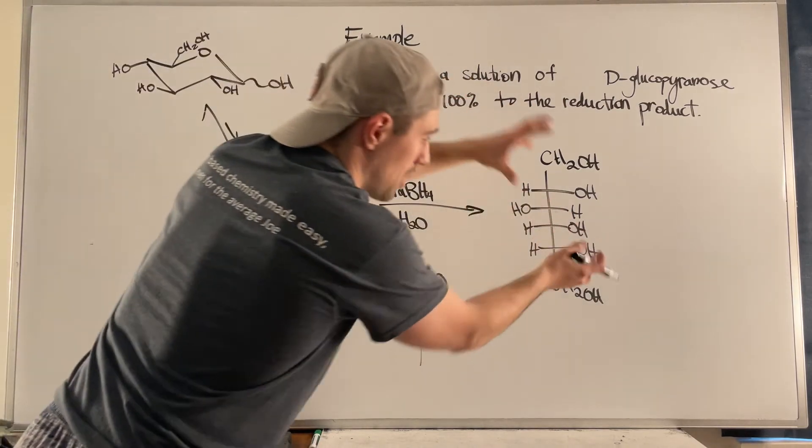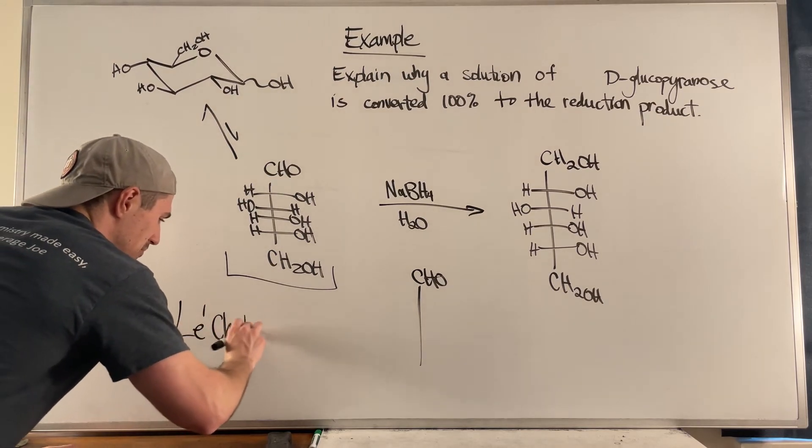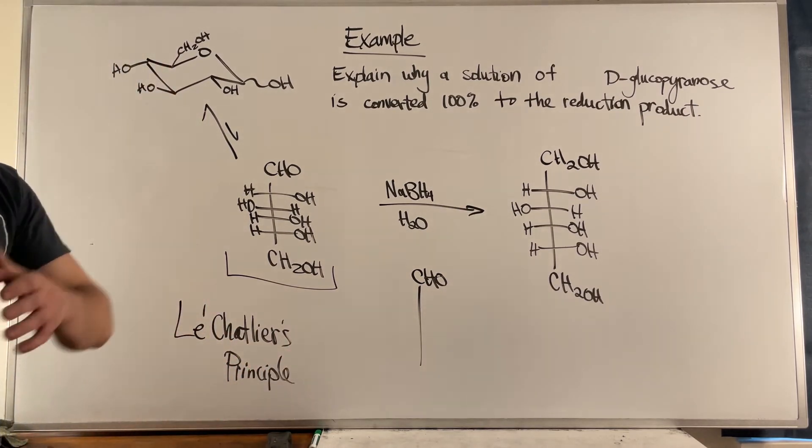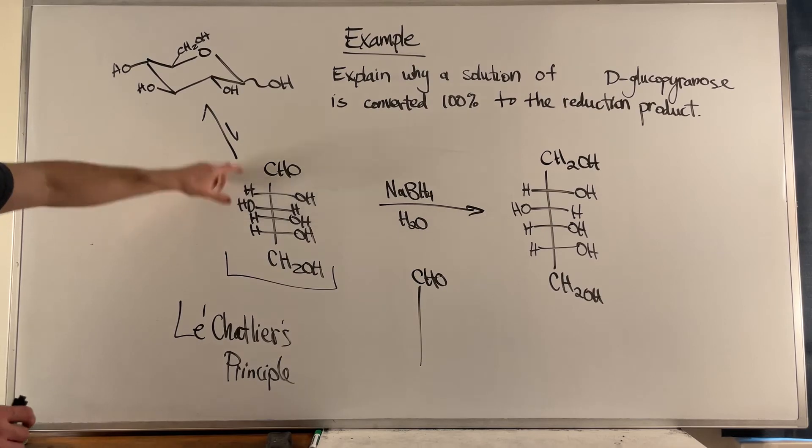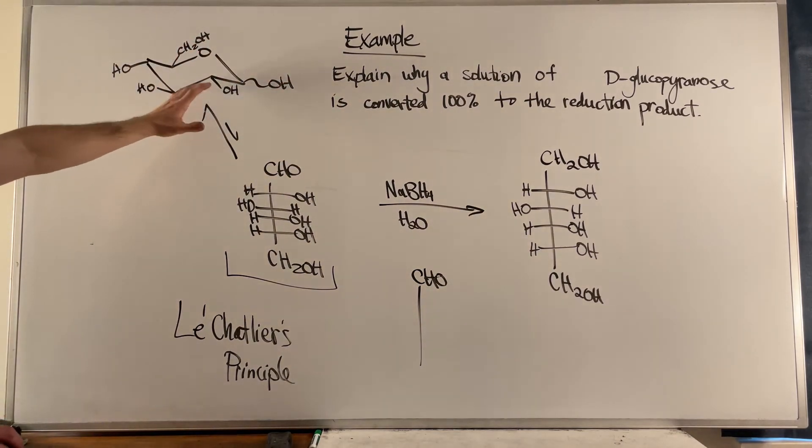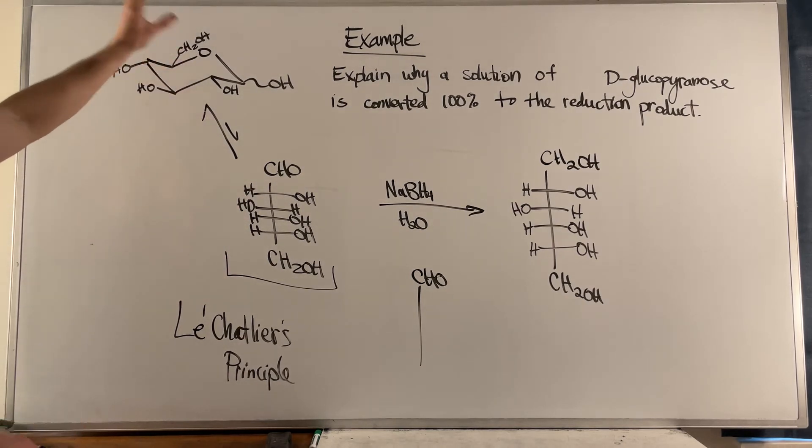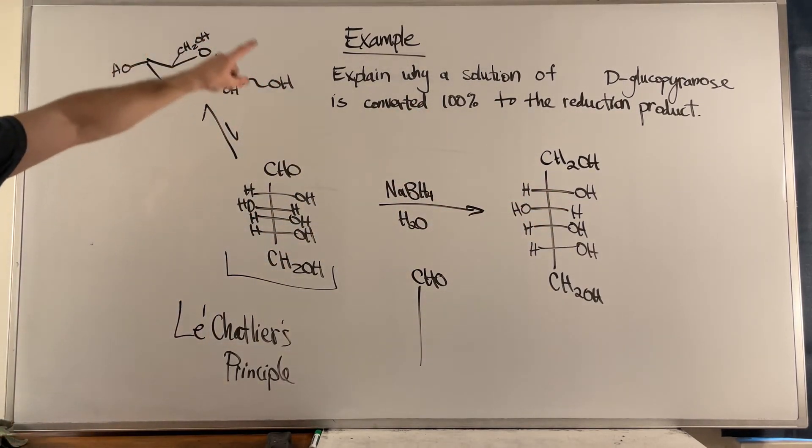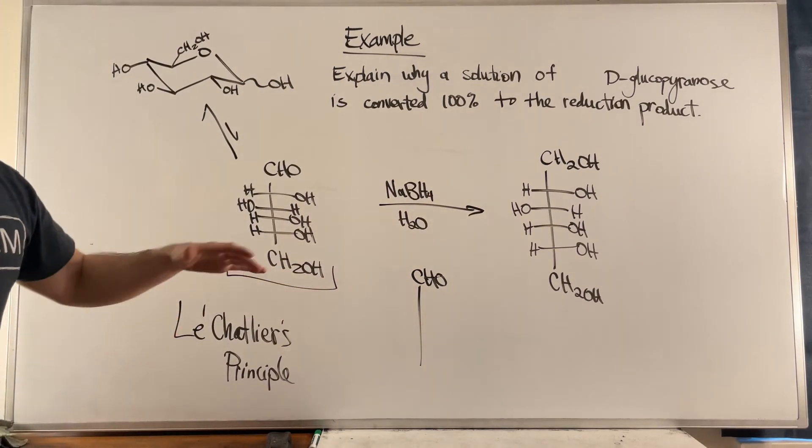When that starts happening, we are bringing back Le Chatelier's principle, which talks about equilibriums. When they're disturbed, they try to counteract the change. So the change here is a reduction in this concentration. As this starts to disappear and turn into this product, the equilibrium, the glucopyranose says 'ah dang, we don't have as much of this as we're used to having, I will convert more of this into this.' Basically by doing the reduction you start to convert cyclic forms of your sugar back to the Fischer projection form, the straight line form, which then just continues to get turned into the reduction product.